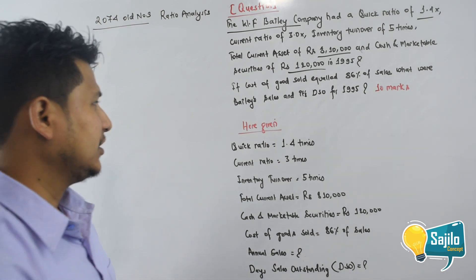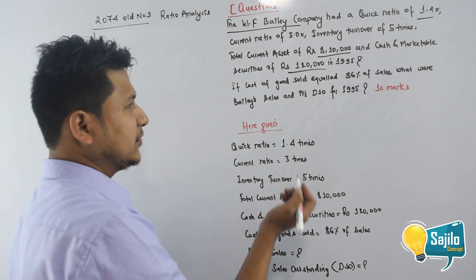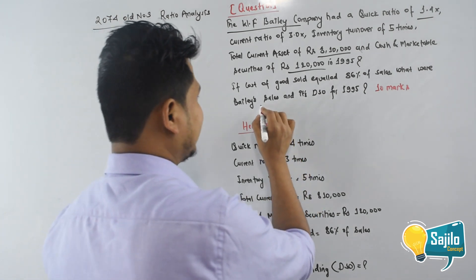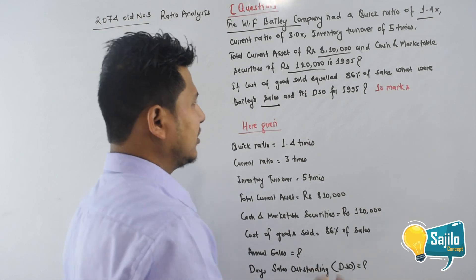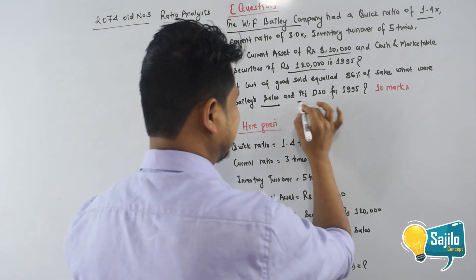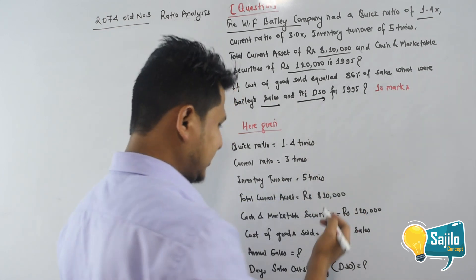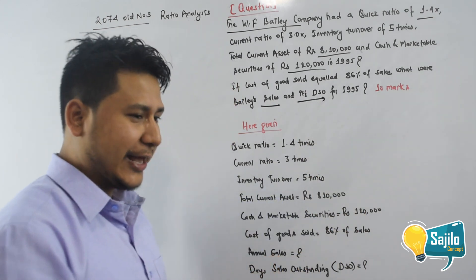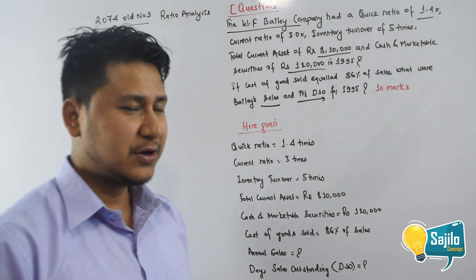The question is: How much are this company's sales? And what is the Days Sales Outstanding (DSO)?